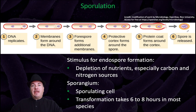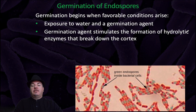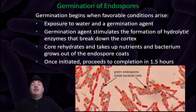This metabolically inactive but viable endospore can then undergo germination. Germination begins when favorable conditions arise, such as exposure to water and a germination agent. The germination agent stimulates the formation of hydrolytic enzymes that break down the cortex of the endospore. The core rehydrates and takes up nutrients, and the bacterium grows out of the endospore coats. Once initiated, germination proceeds to completion in about one and a half hours.